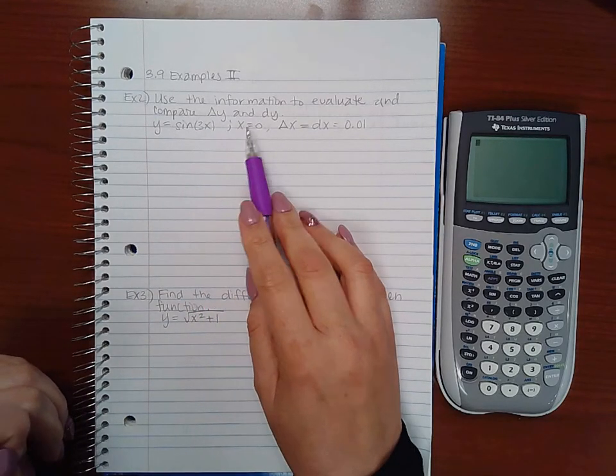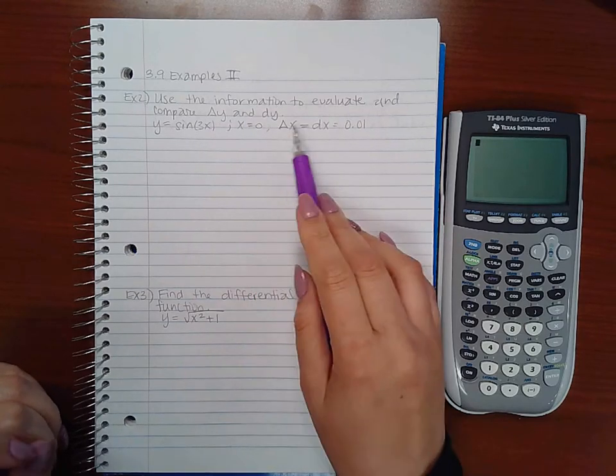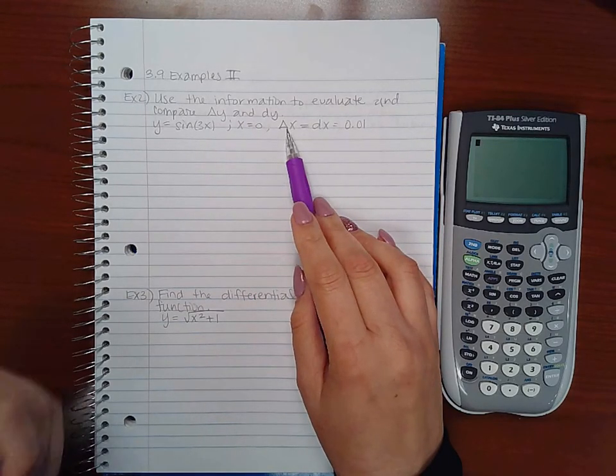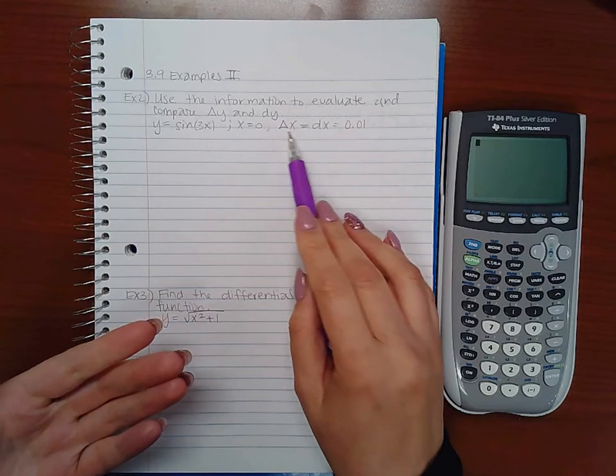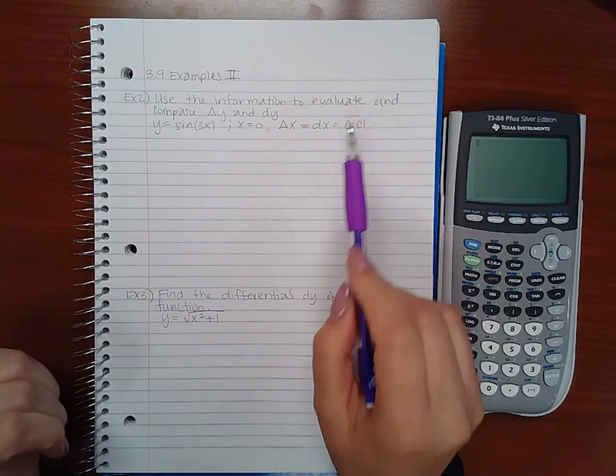The x value they want us to use is x equal to 0. And the delta x or the differential dx, they're saying they're equivalent here. They want us to use 0.01.